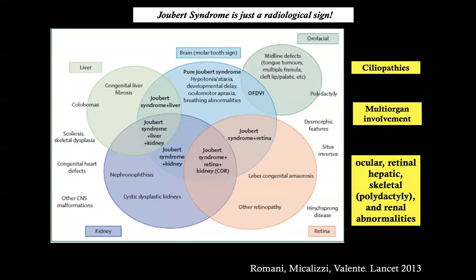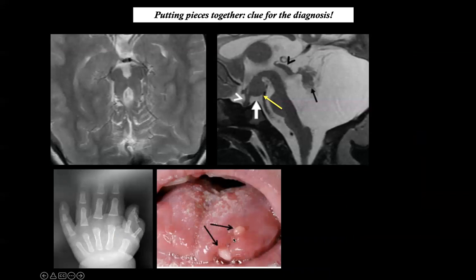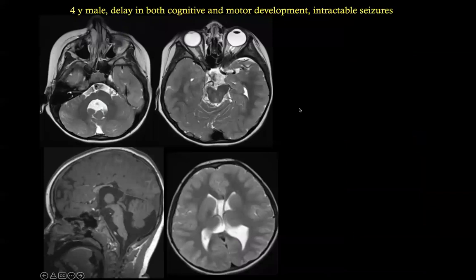My pearl: if you have malformation of the brainstem, use DTI — it is very important. Once you recognize Joubert syndrome, request a genetic panel. These are ciliopathies with multi-organ involvement, but as a neuroradiologist, I identify the Joubert pattern and request the panel. Sometimes you have associated findings like hypothalamic hamartoma or hamartomas of the tongue suggesting orofaciodigital type 6; other times Joubert is the only finding. Either way, the rule is simply to ask for the panel.